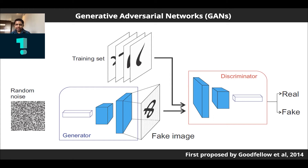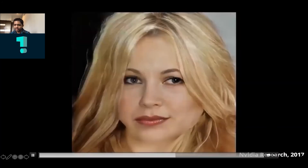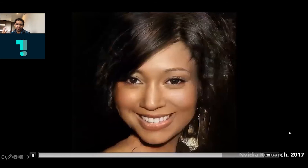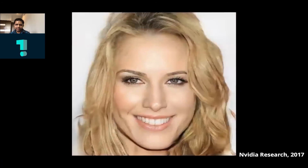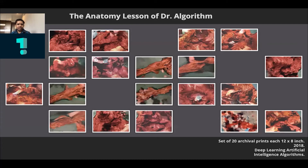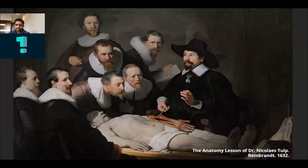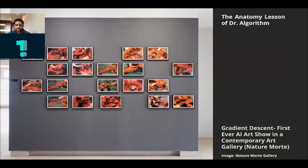That ultimately produces images like these — all these faces are fake, and this was already done in 2017. Both the resolution and the realism of these images has vastly improved since then. I'm not particularly interested in creating realistic images — I'm more interested in the art aspect of it, so I use GANs in various ways to generate different kinds of imagery.